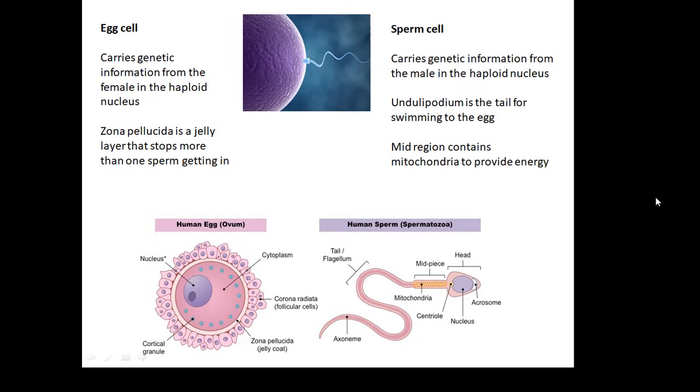The sperm cell carries the genetic information from the male in the haploid nucleus. In the case of humans, it's 13 chromosomes from daddy. They have a tail for swimming which is called an undulipodium. That's the tail for swimming to the egg, for the journey to the egg. The middle bit, before the tail, contains lots of mitochondria to provide energy, the energy needed to swim to the egg.